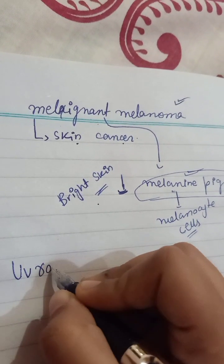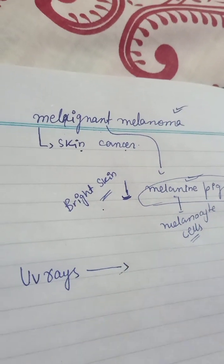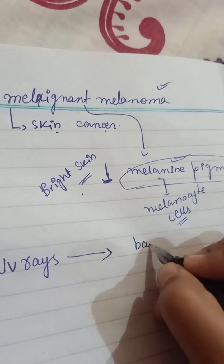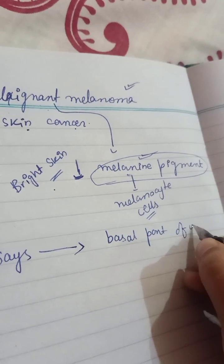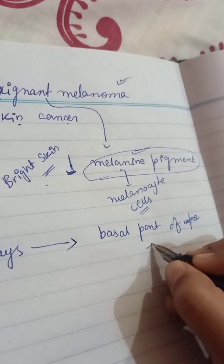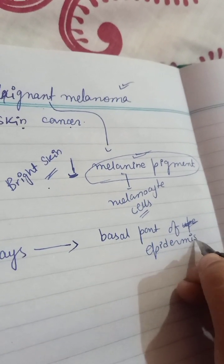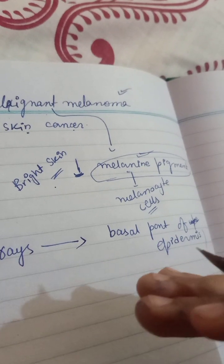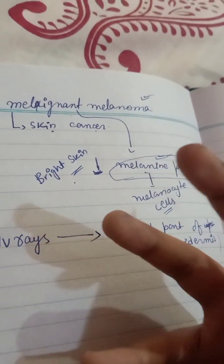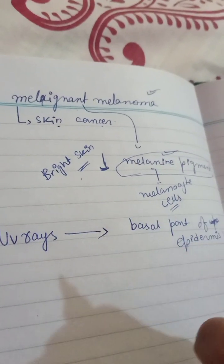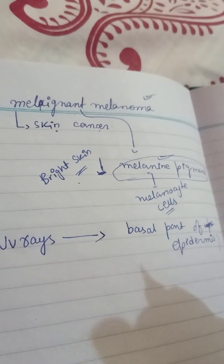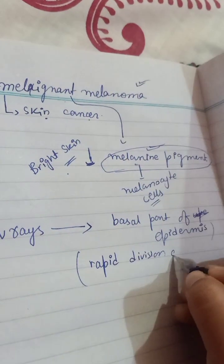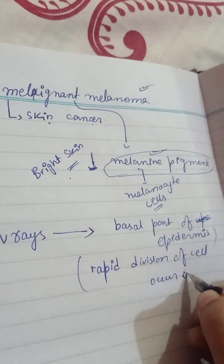If we talk about UV rays — sunlight — the UV rays basically act on our skin, on the basal part of the epidermis. Because of the UV rays, the basal part is affected and abnormal growth of cells occurs. A change occurs in the gene, and because of that, rapid division of cells occurs on the skin.